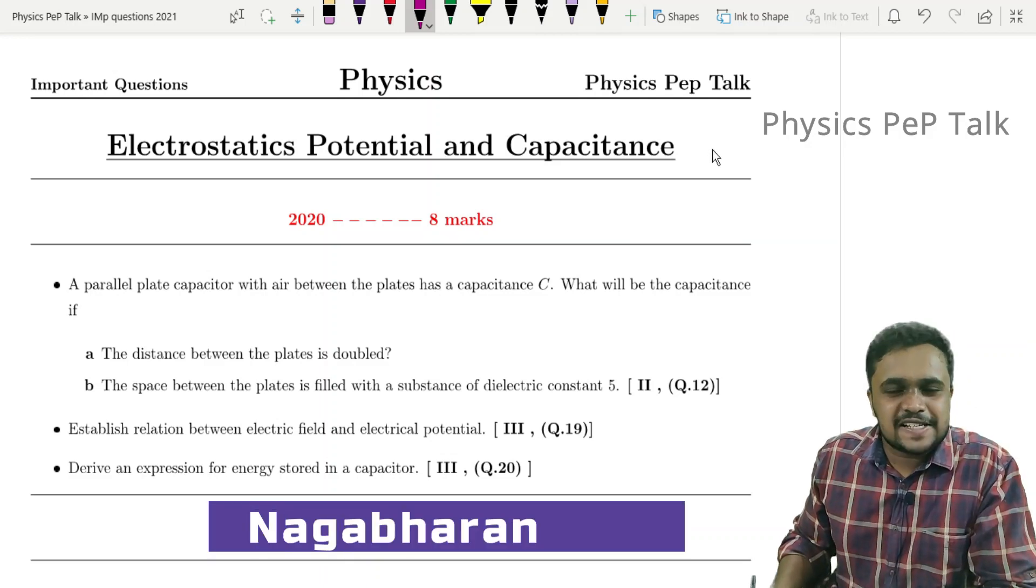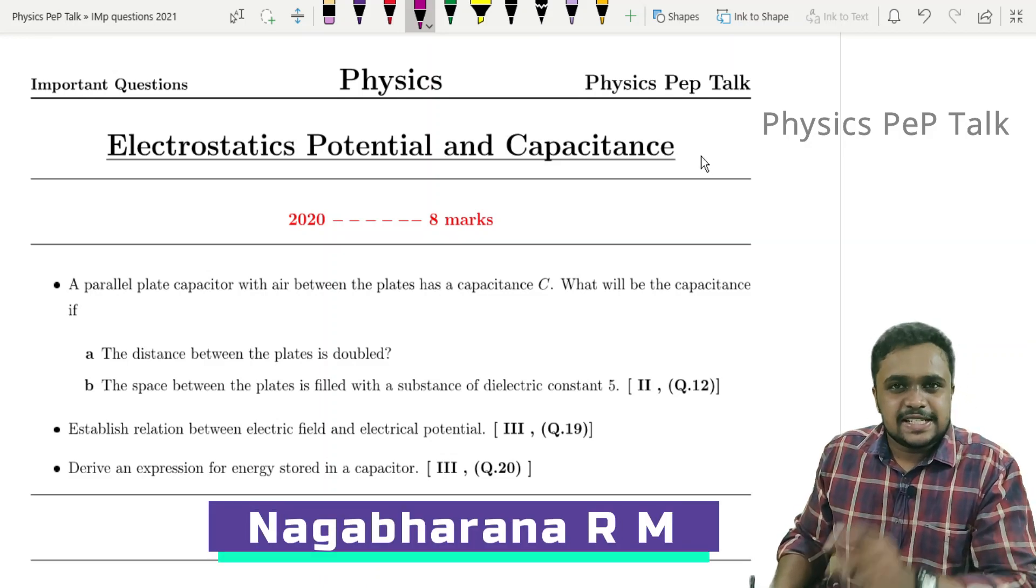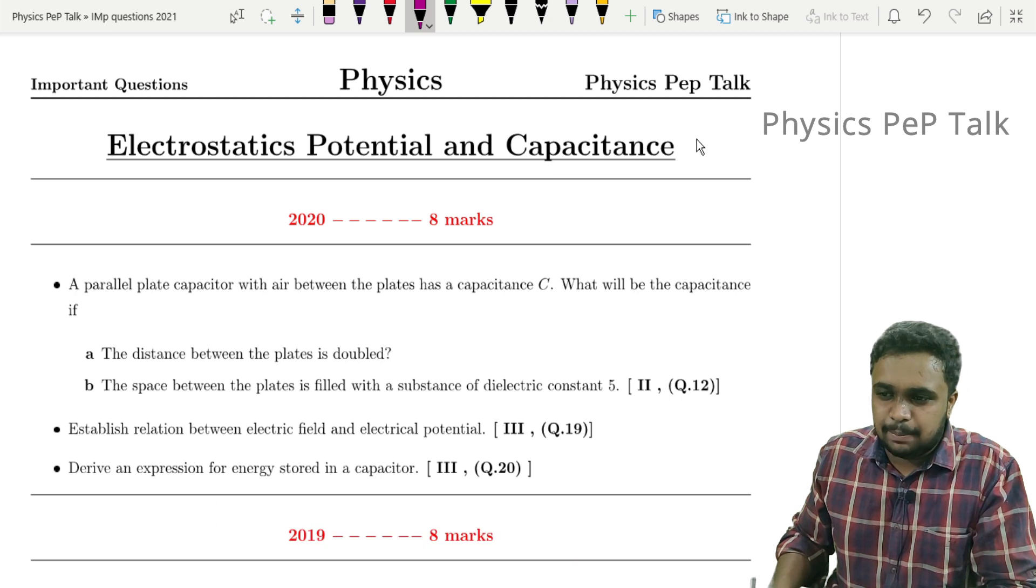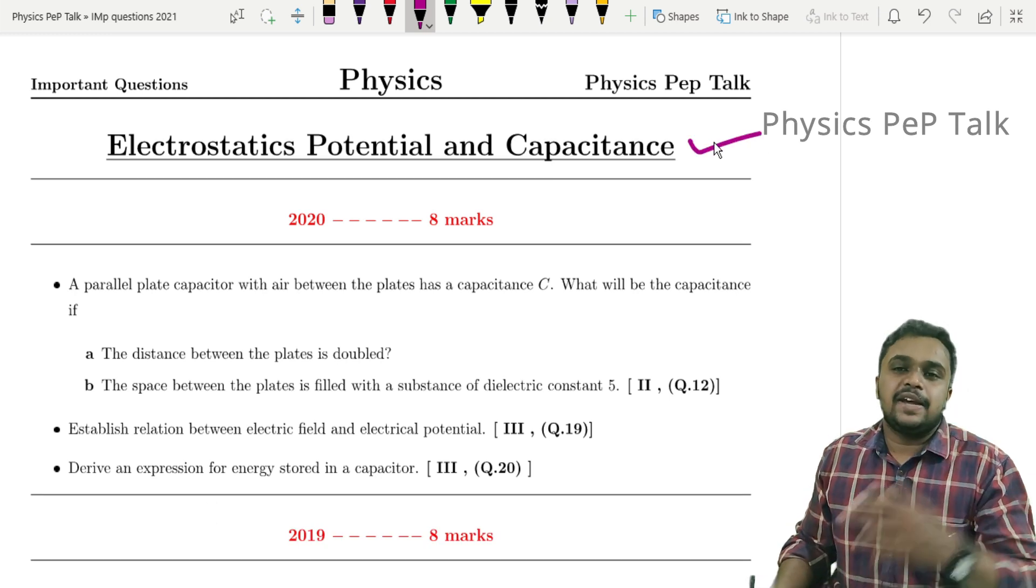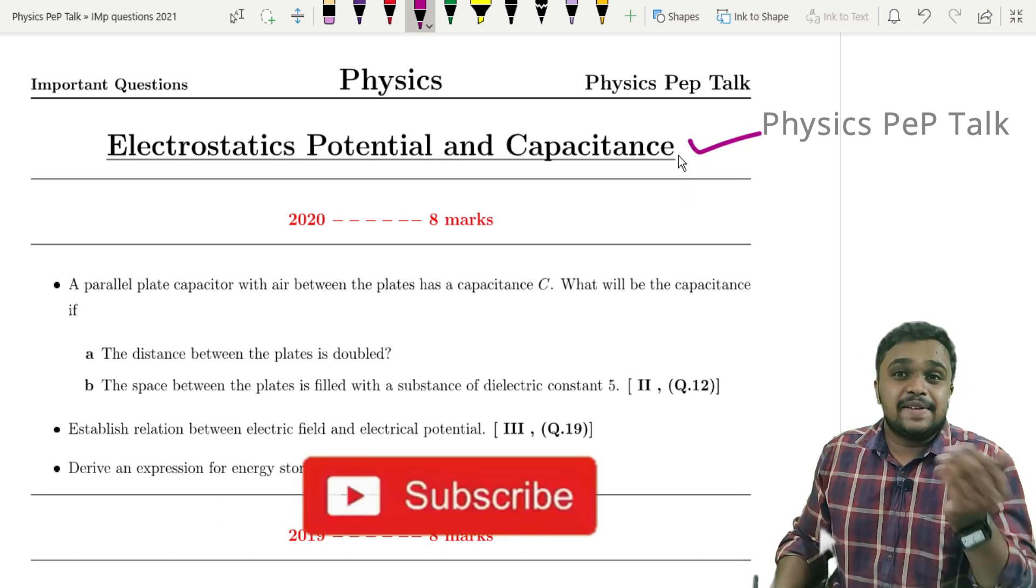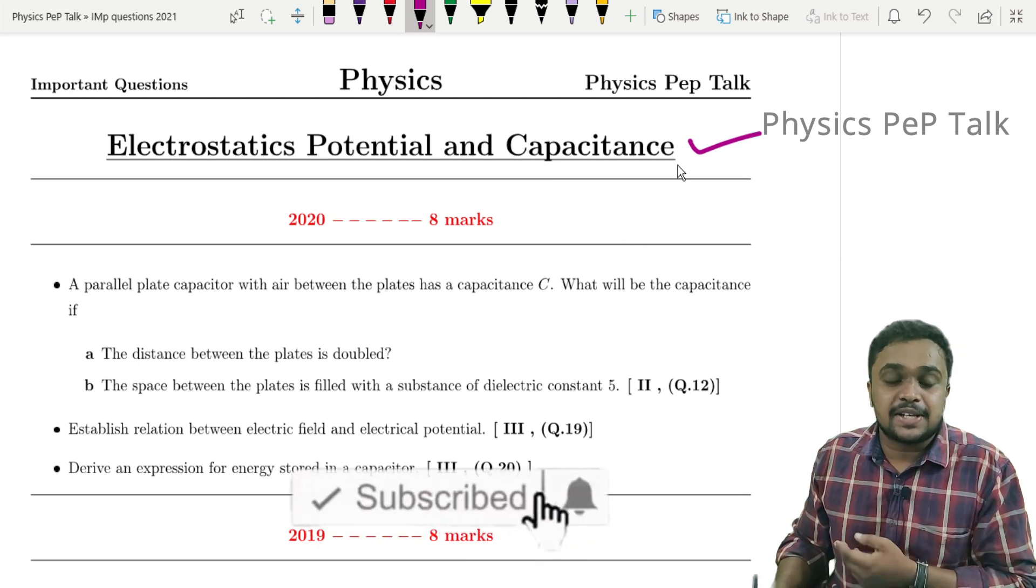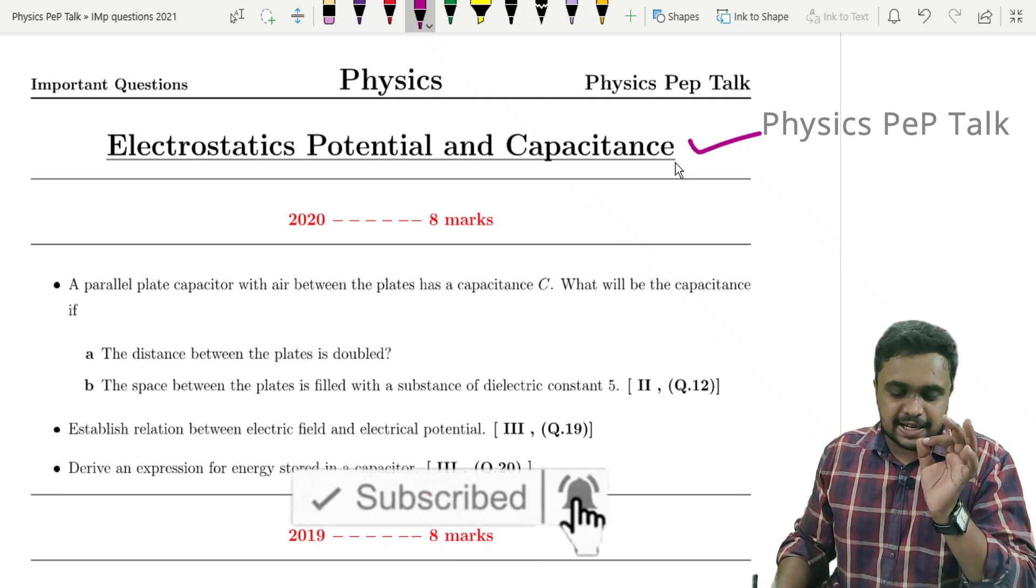Hello students, welcome to Physics Pep Talk video. Today's chapter number two is Electrostatic Potential and Capacitance. Previous three years' model paper list, weightage, the marks - in this topic the must-read questions I will discuss with you.